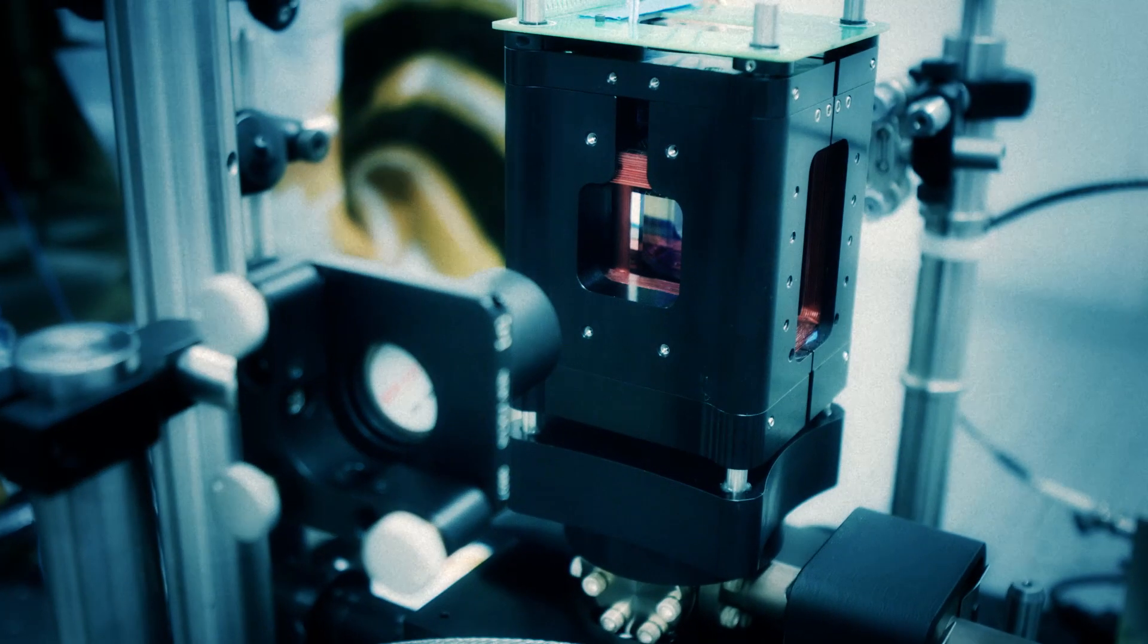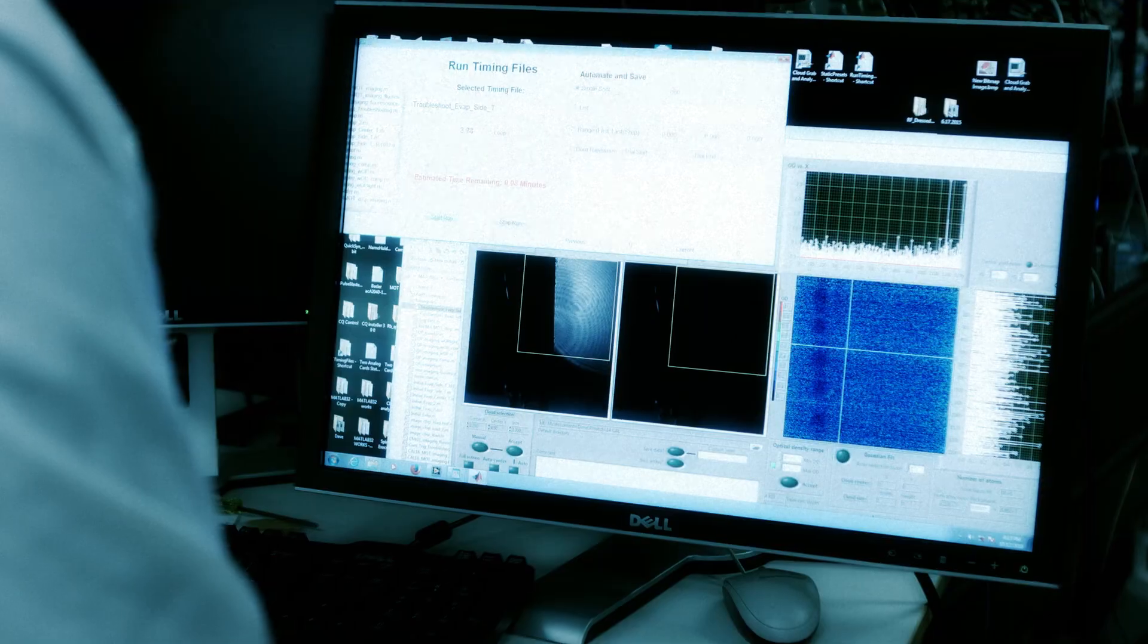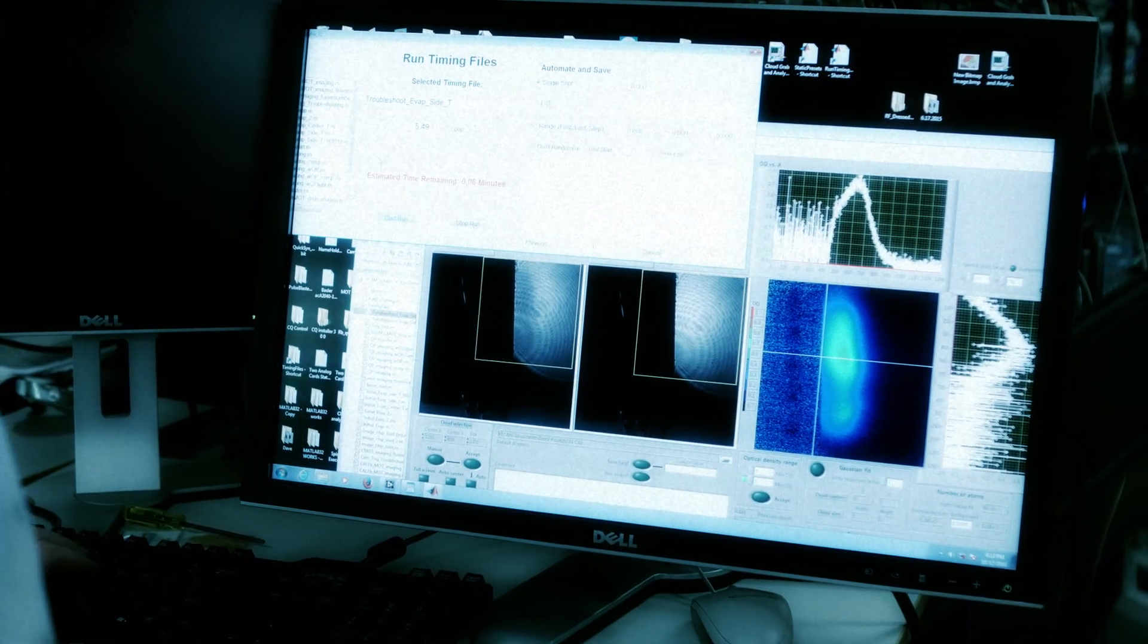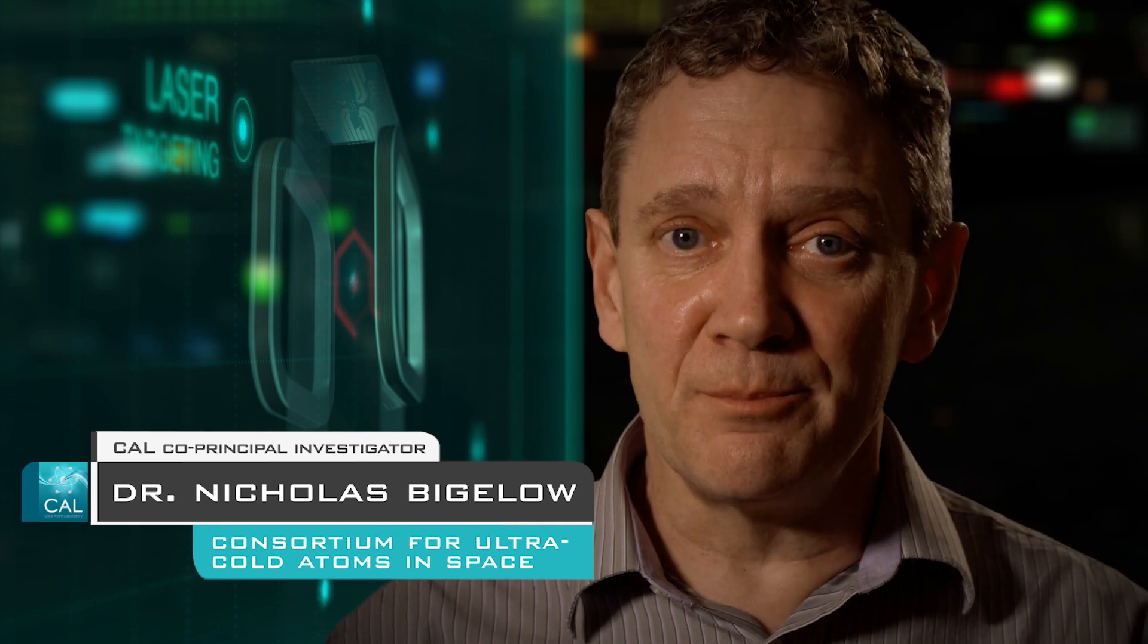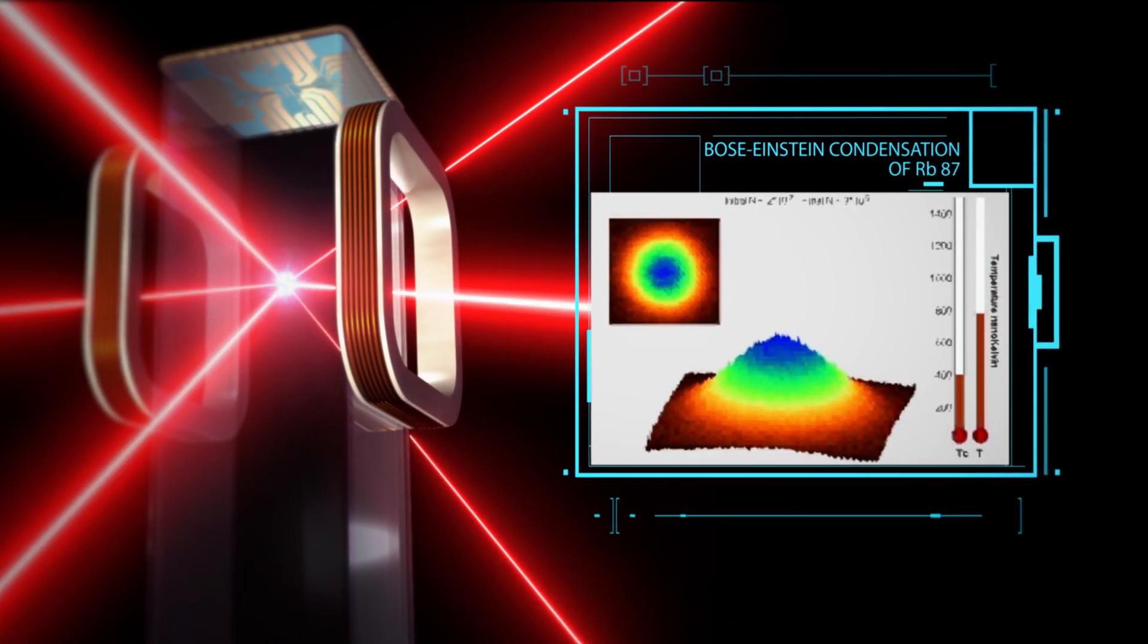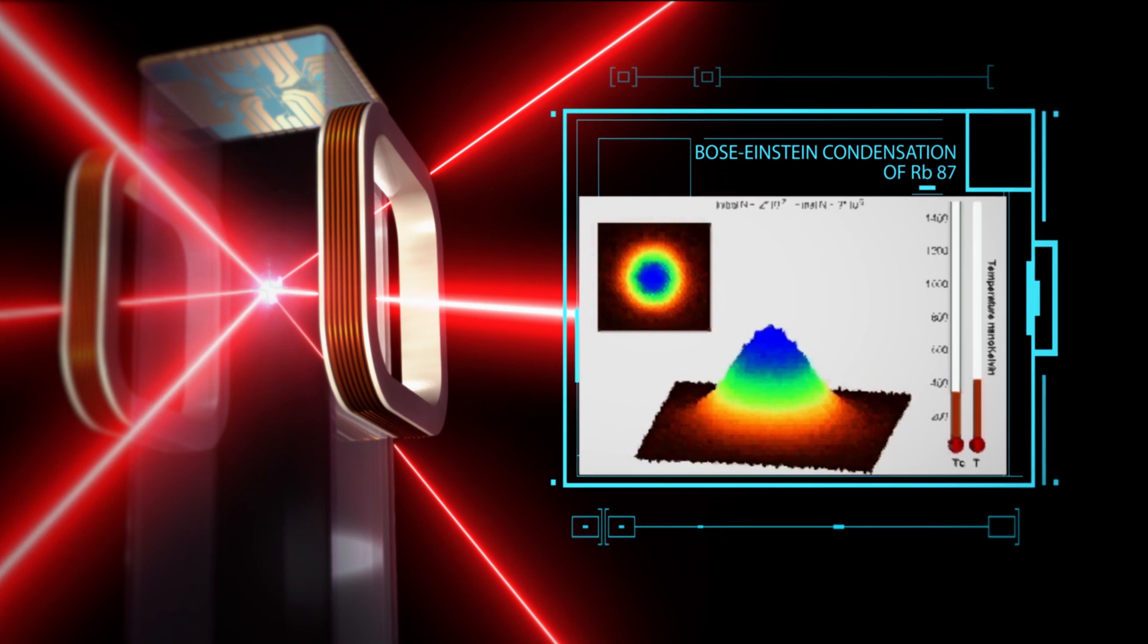That's where the ultra-cold temperatures come in. If you cool atoms down to some of the coldest temperatures you can imagine, colder than any other place in the natural universe, the atoms are moving very, very slowly. And if you're going to make some measurements about their properties, if they're moving slowly, you can make that measurement a lot more precisely.